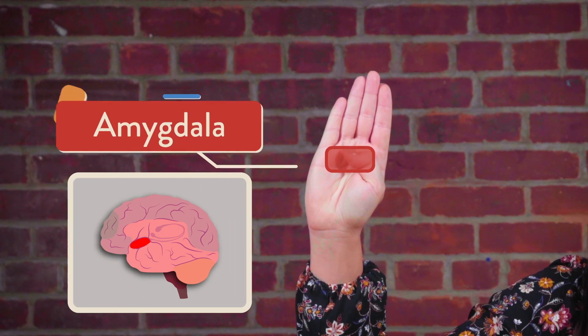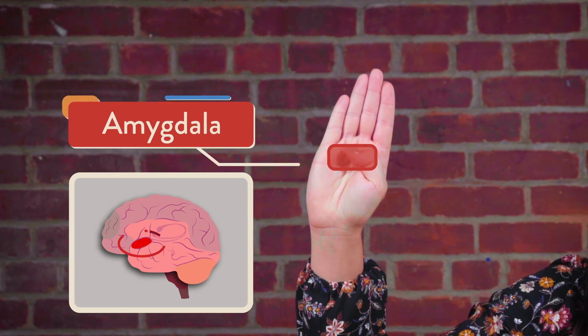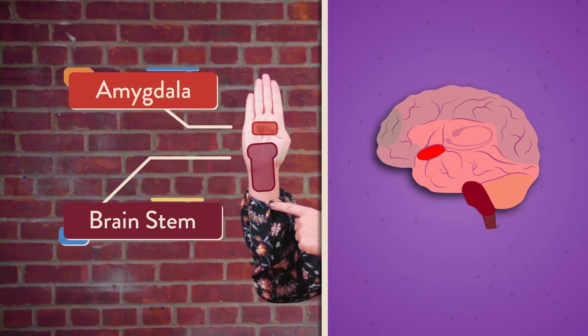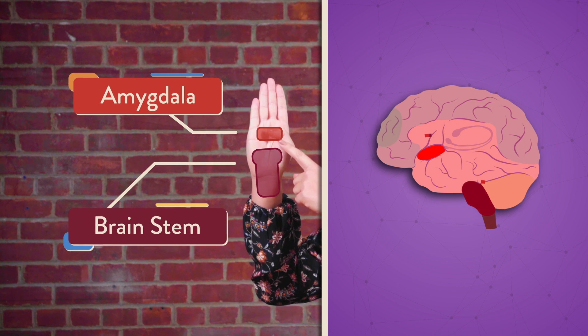We're going to use our hand to make a model of our brain. Hold up your hand like this. We start with our wrist and palm — this represents our brainstem. Now, fold your thumb into your palm, just like this. Can you do that? Your thumb represents the amygdala. These parts of our brain, our brainstem and our amygdala,